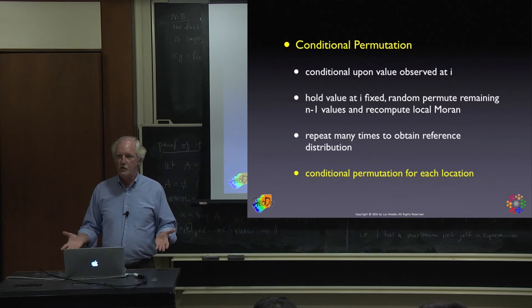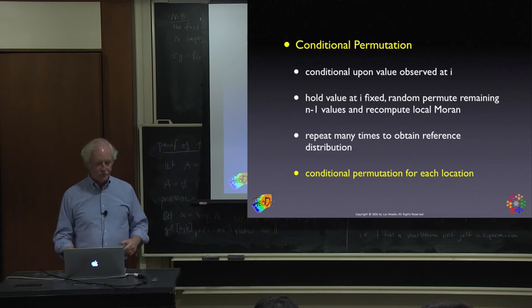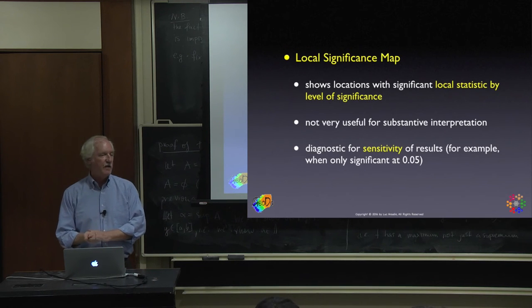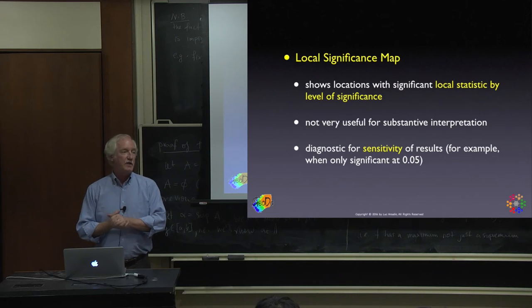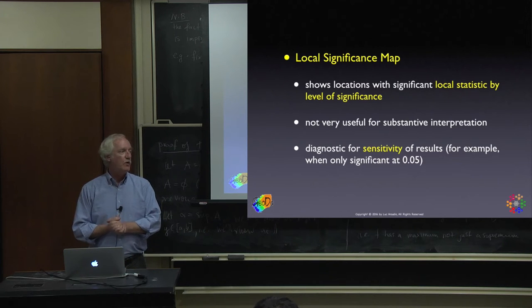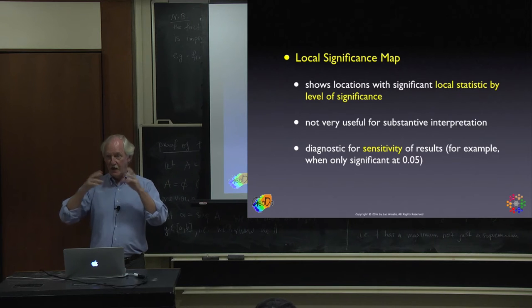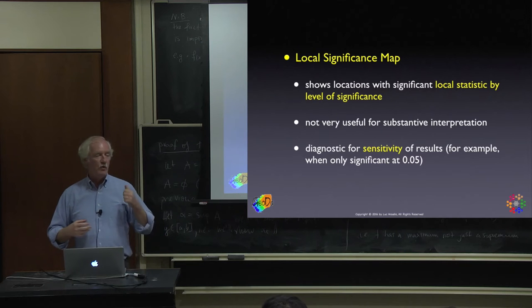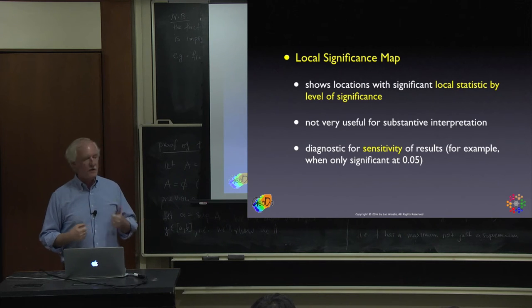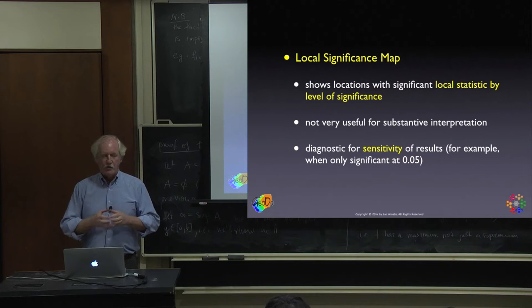The principle is very simple — just the same idea as before but locally. Once we have significance, we can map the locations that are significant and also show the pseudo p-value. Remember, this is not a real p-value — it's based on the tails of the reference distribution, so it's purely data-driven. Set the random seed, otherwise you can't replicate this.